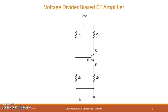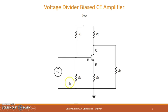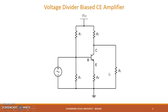Here is the voltage divider bias circuit. If you want to use it as a CE amplifier, then connect the source of the AC voltage you want to amplify between base and ground, and connect the load between collector and ground, where your amplified signal will be available.